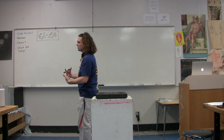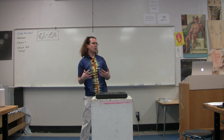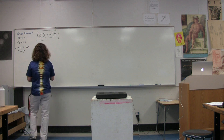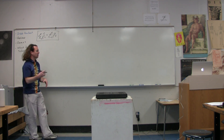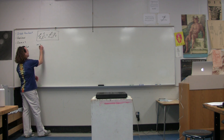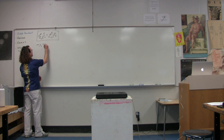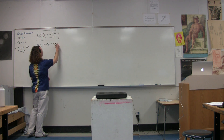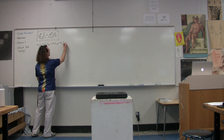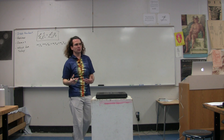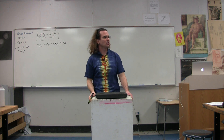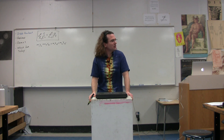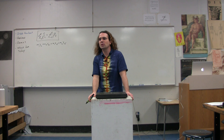Whenever you use this equation, you need to actually write out what's in it. For example, momentum is mass times velocity, so you write: mass of object 1 times velocity of object 1 initial, plus mass of object 2 times velocity of object 2 initial, equals mass of object 1 times velocity of object 1 final, plus mass of object 2 times velocity of object 2 final. You have to write out the equation before you use it — just like with Conservation of Energy.